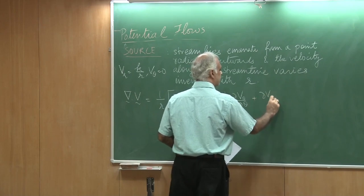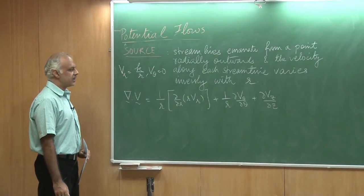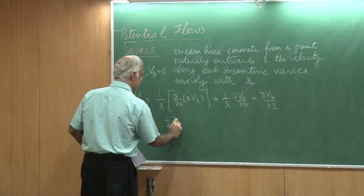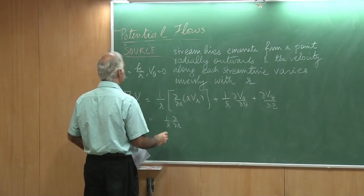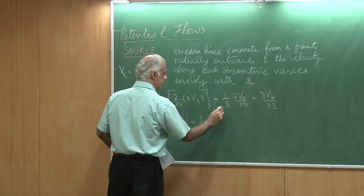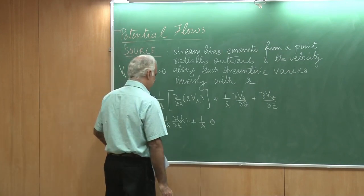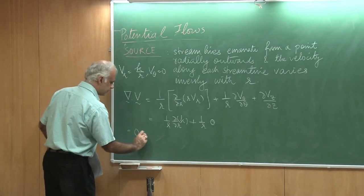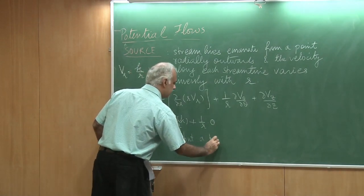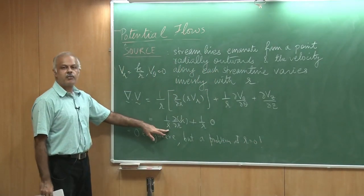The z direction, we are not so much interested, we are only interested in the R theta plane. So if I plug this in, I would get 1 by R del by del R of R times Vr gives me simply a K plus 1 by R times del V theta by del theta, which is 0 actually because my V theta is 0. And it turns out this is actually 0 everywhere, but a problem at R equal to 0.